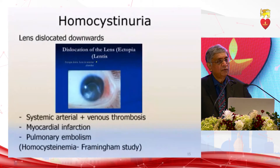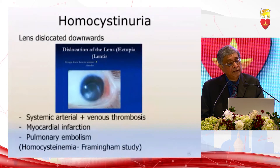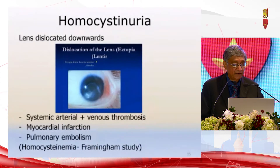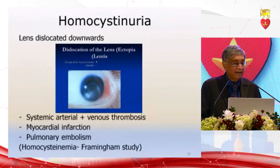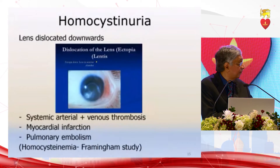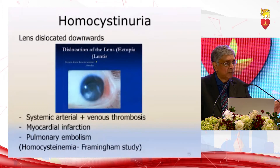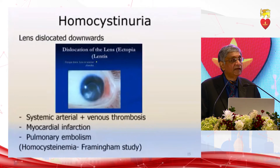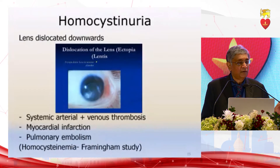We recognize homocystinemia as a risk factor for ischemic heart disease, but this originally came from homocystinuria, which is a metabolic disease of long-standing knowledge. In homocystinuria, the lens is dislocated downwards — compared to Marfan syndrome where it is dislocated upwards. Homocystinuria is associated with systemic arterial and venous thrombosis, and therefore myocardial infarction risk is greater because of the pro-thrombotic state.